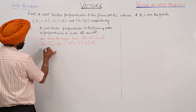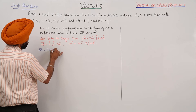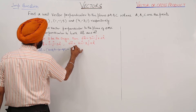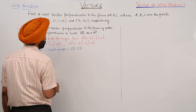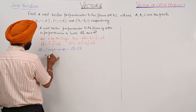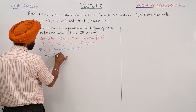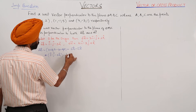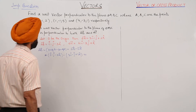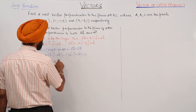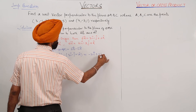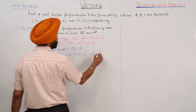Vector AB is equal to the position vector of B minus the position vector of A, which equals vector OB minus vector OA. This becomes: i cap minus j cap minus 3k cap, minus 3i cap minus j cap plus 2k cap, giving us minus 2i cap plus 0j cap minus 5k cap.